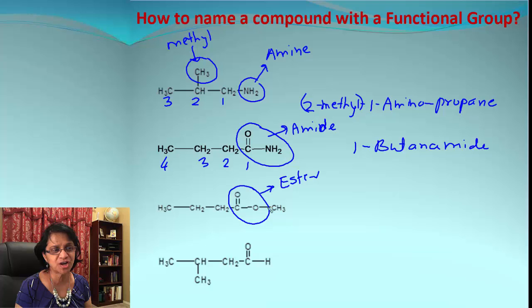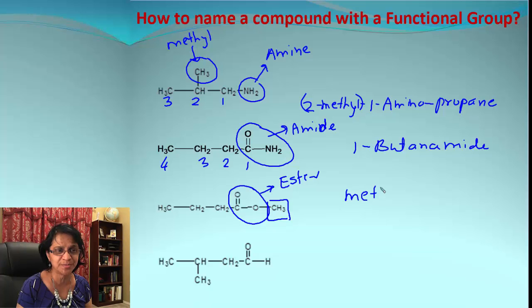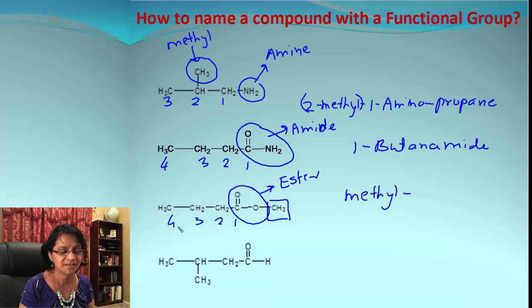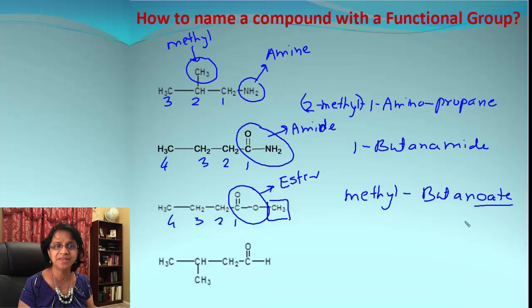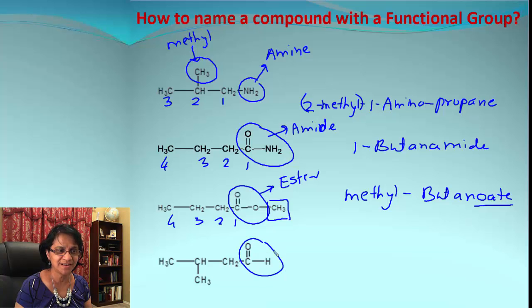Look at this COO — obviously this is an ester group. When you name an ester, anything that comes after COO, we write that one first — it is the methyl group. Then count the number of carbon atoms on the other side: those are four, so we get butane, and for an ester we add '-oate,' so it is methyl butanoate.